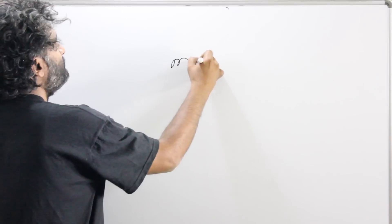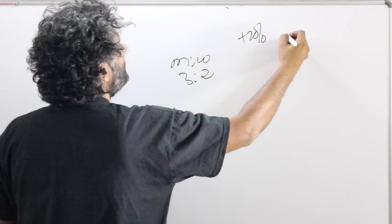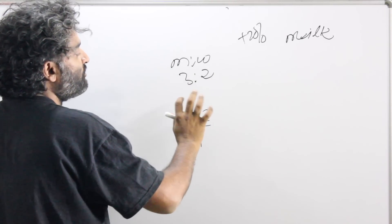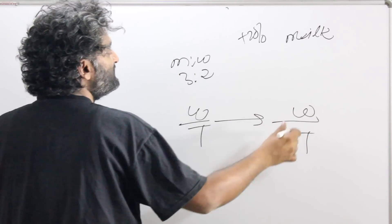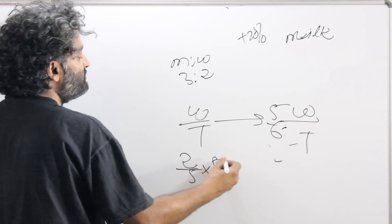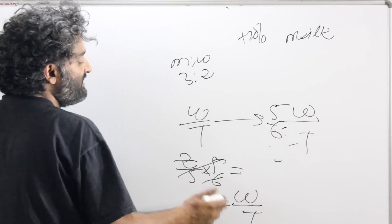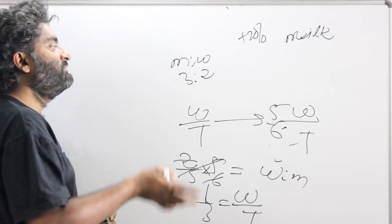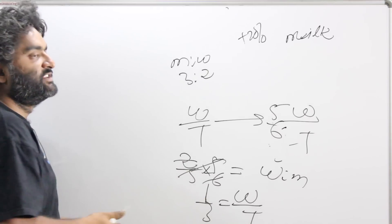If instead the volume is increased by 20% by adding pure milk, we track water/total, because milk is being added but water quantity will not change. The total becomes 6/5 of original, water stays the same, so the multiplying factor becomes 5/6. Water/total was 2/5, multiplied by 5/6 gives the new water/total. From this, we can find water:milk or milk:total for the new solution. This builds toward the concept of removal and replacement.